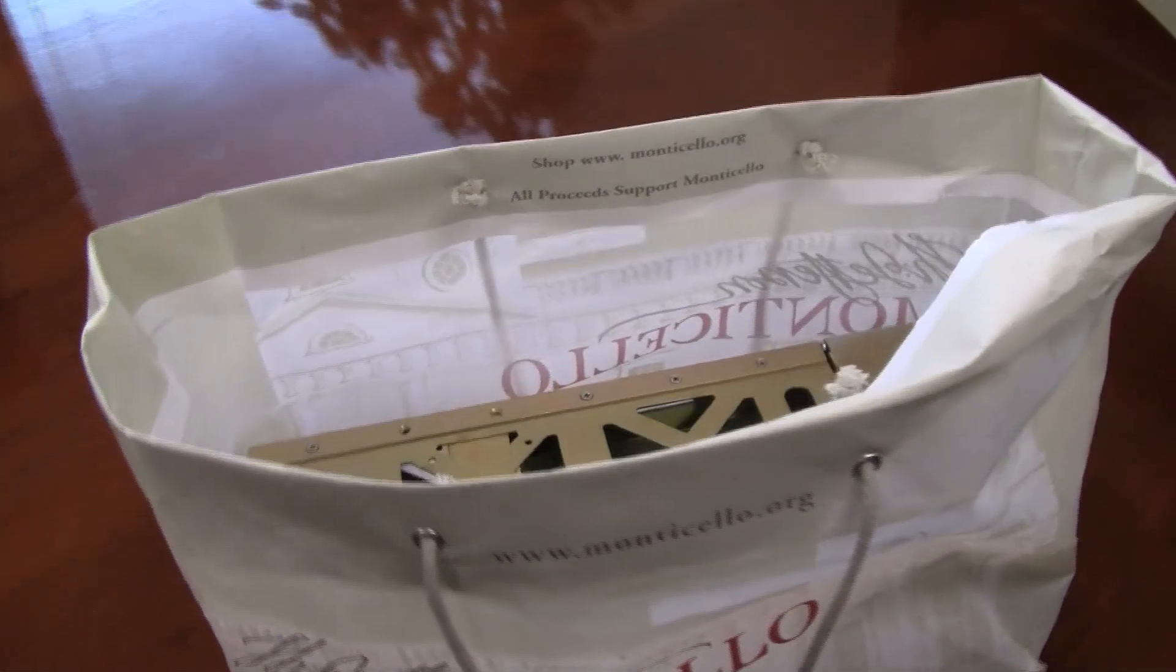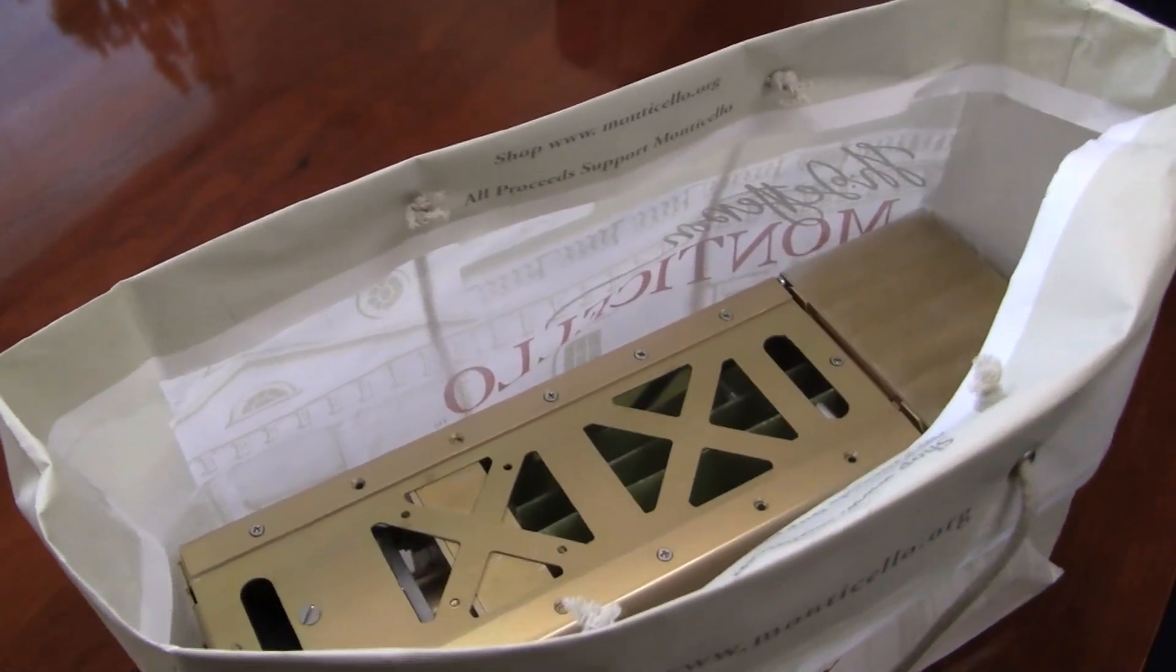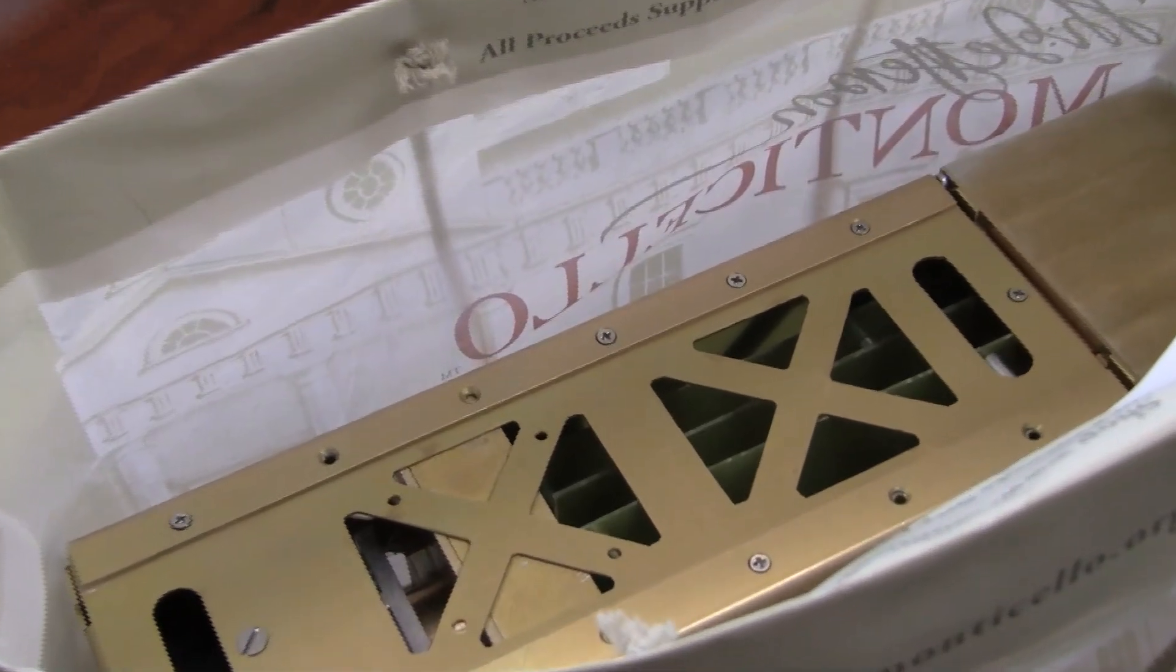The ExoplanetSat has a volume of three liters. It's 10 centimeters tall, 10 centimeters wide, and 30 centimeters long.